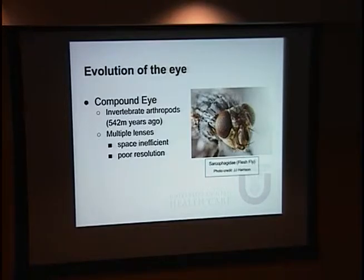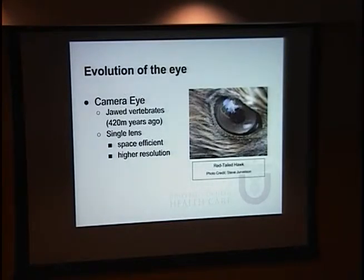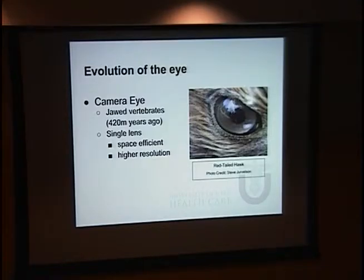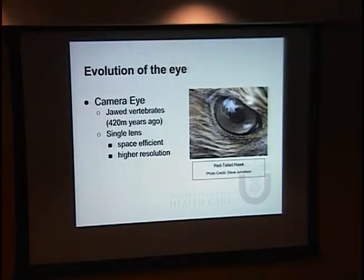The downside of the compound eye is that it's very space inefficient, because it constantly reproduces the image-forming lens for every new photosensitive region. It ends up with a higher burden of lens material, and doesn't really show up in any animals larger than invertebrate arthropods. The other type of eye — the camera eye — evolved completely independently, shared by all jawed vertebrates, probably about 100 million years later. We have a single lens that produces the image for all photosensitive regions simultaneously, allowing higher resolution by cramming photoreceptors into extremely high densities.